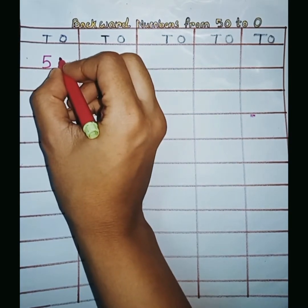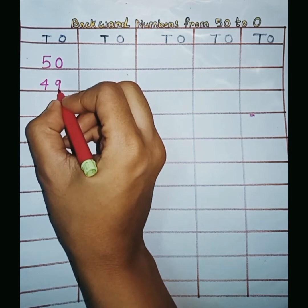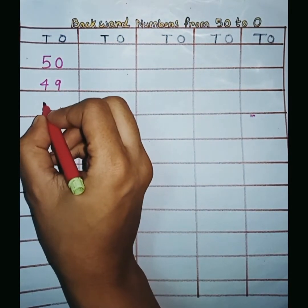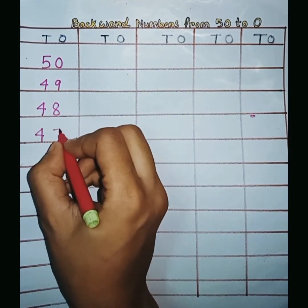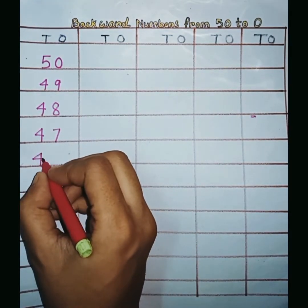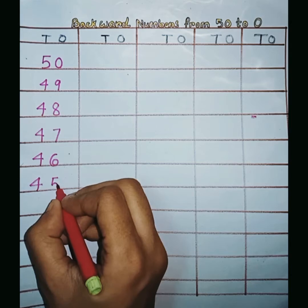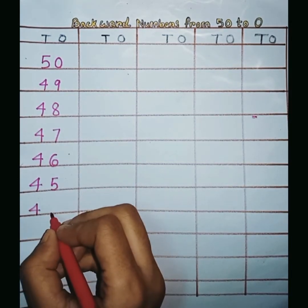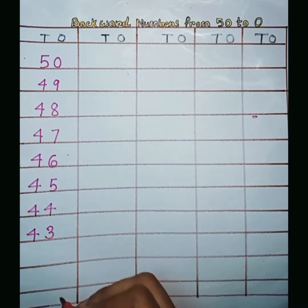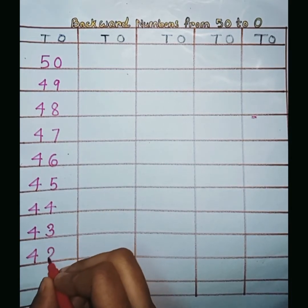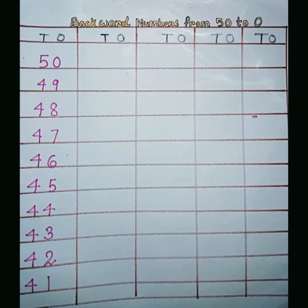50. 4, 9, 49. 4, 8, 48. 4, 7, 47. 4, 6, 46. 4, 5, 45. 4, 4, 44. 4, 3, 43. 4, 2, 42. 4, 1, 41. Next,